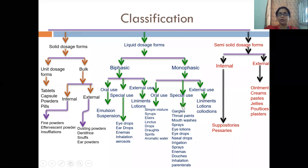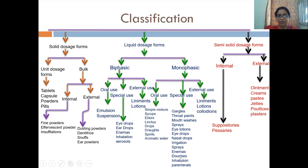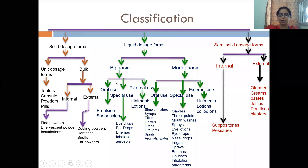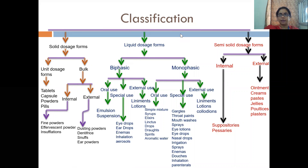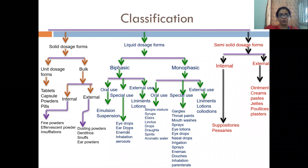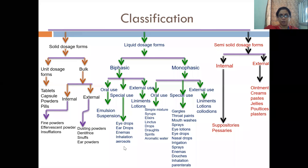Those are special uses in monophasic. Now in biphasic, we also divide into three categories: oral, external, and special. For oral use: emulsions and suspensions. For external use: lotions and liniments. For special use: eye drops, ear drops, enemas, inhalations, and aerosols. So this was our liquid dosage form classification.